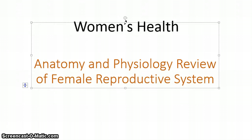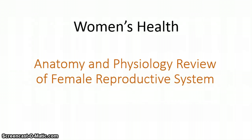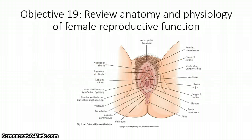Hi, this is Tracy. Welcome back. We're going to do a brief review of the anatomy and physiology of the female reproductive system. This is going to be part of unit 2. You can find it in chapter 5 of your women's health book. So let's go ahead and get started, reviewing the anatomy and physiology of the female reproductive function.